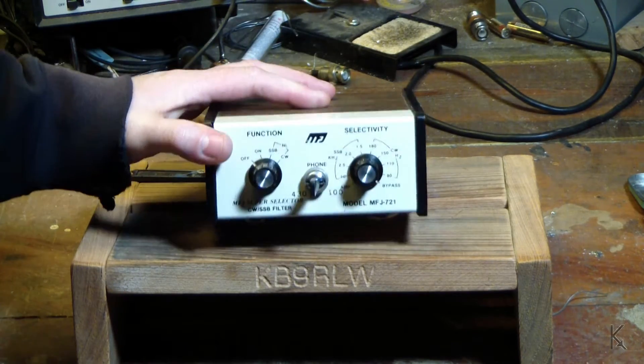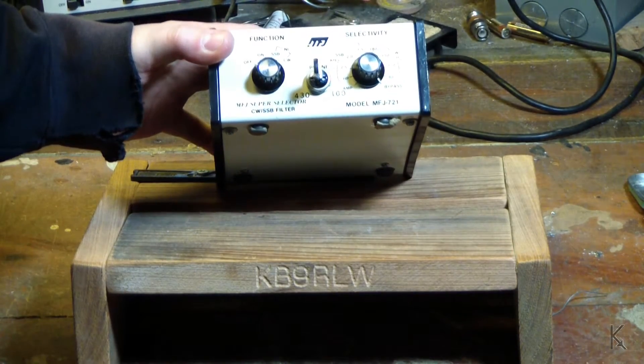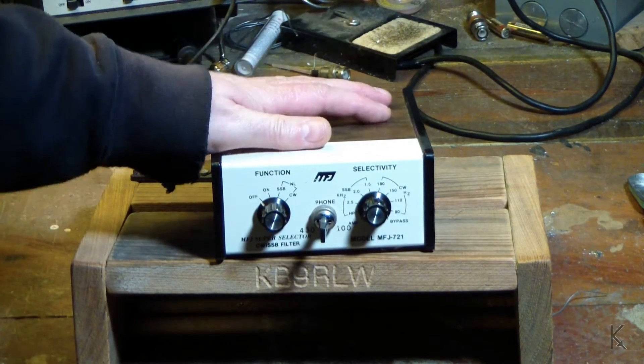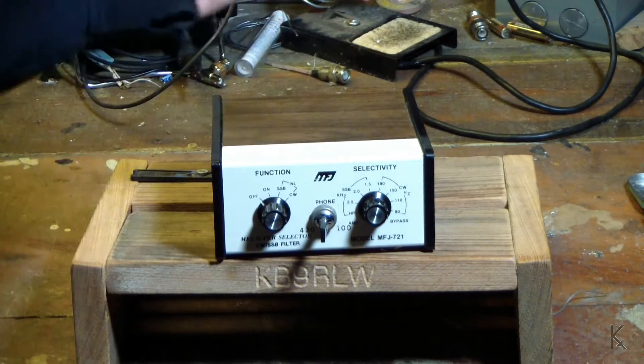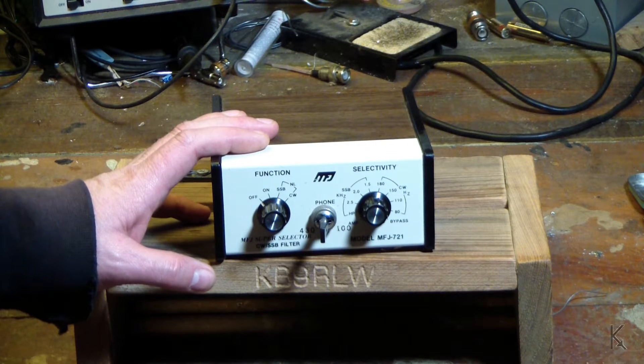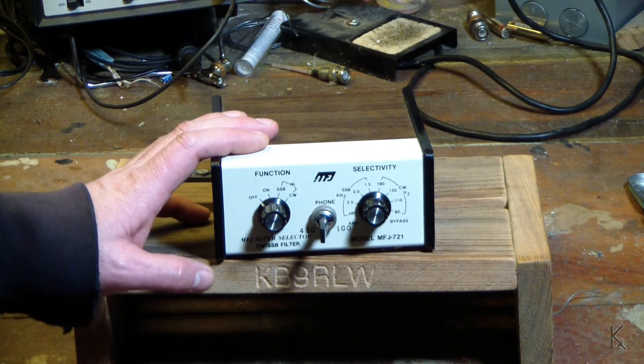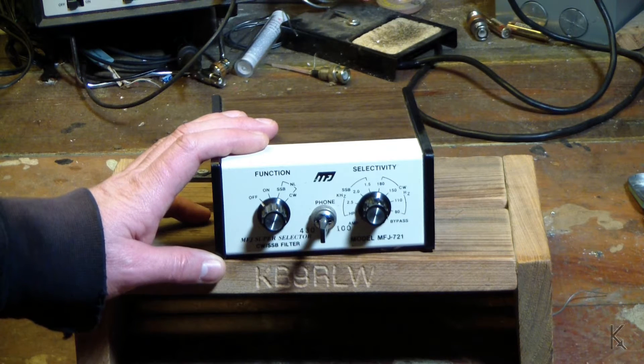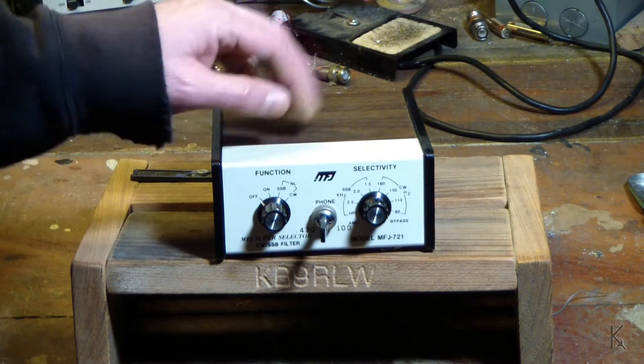But, that'll be another video. I think this video, I'm just going to give you a good look at this old piece of MFJ gear. And we're going to open it up and look inside. We're going to look at the board. I'm going to do some disassembly anyway. So, I might as well take the parts out and show you the construction quality or lack thereof on an early MFJ. So, let's open her up.